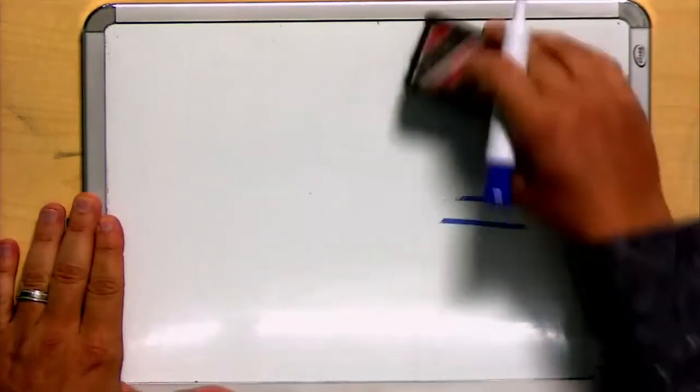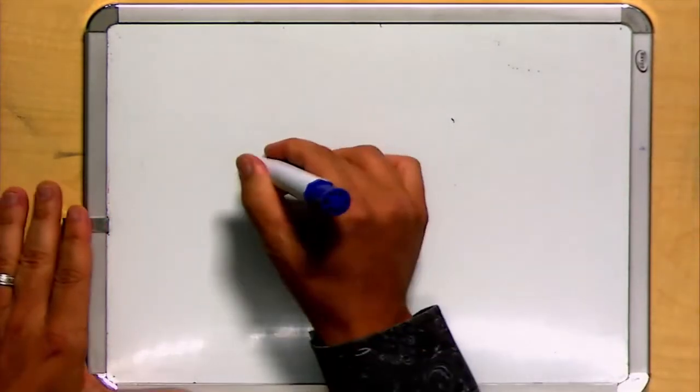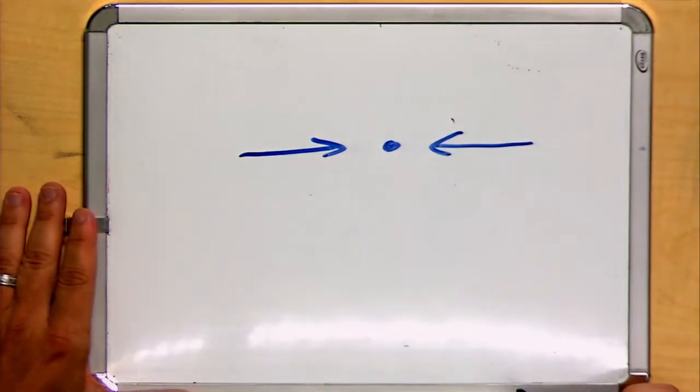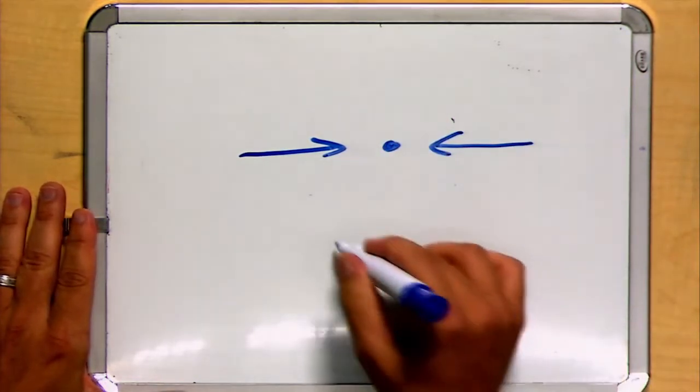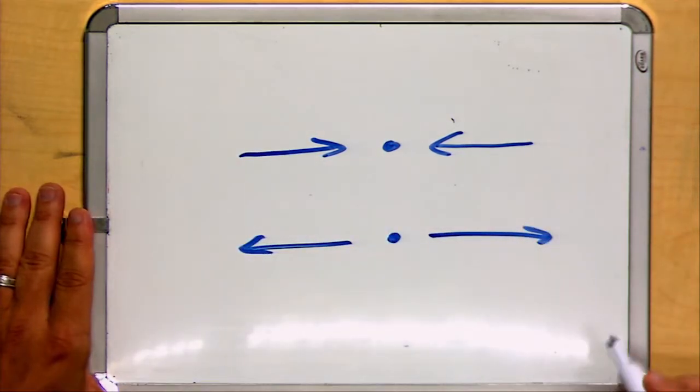First of all, I want to consider what happens. Consider the idea of if you take two forces and you apply them along a single line. We know there's two ways to do that. We can do that in tension, or we can do that in compression.